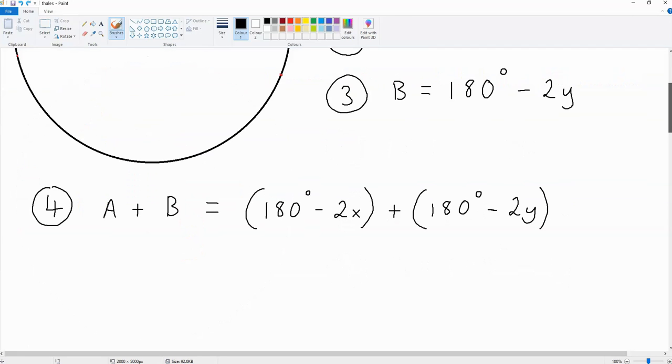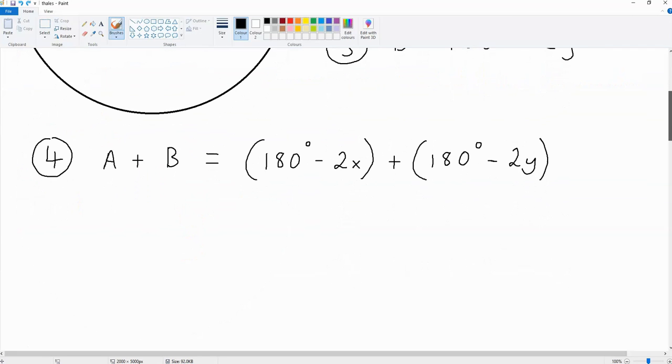Now, thanks to the information we've gathered, we can say that a plus b is equal to 180 degrees minus 2x plus 180 degrees minus 2y. If we simplify this equation,